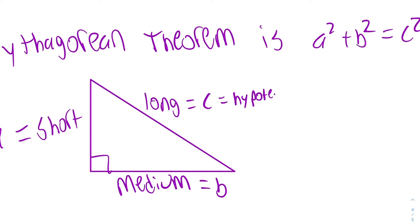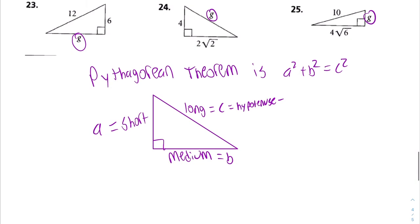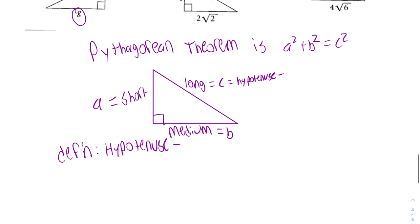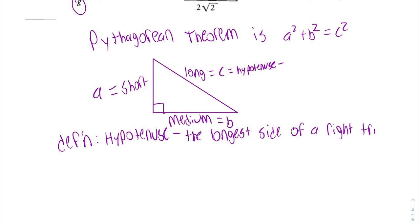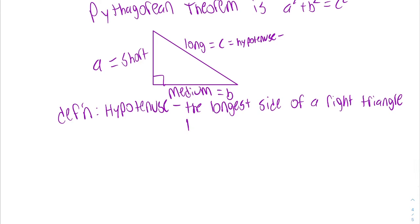C is also called the hypotenuse. The hypotenuse's definition can be the longest side of a right triangle, or you could describe it as the side across from the right angle of a right triangle.